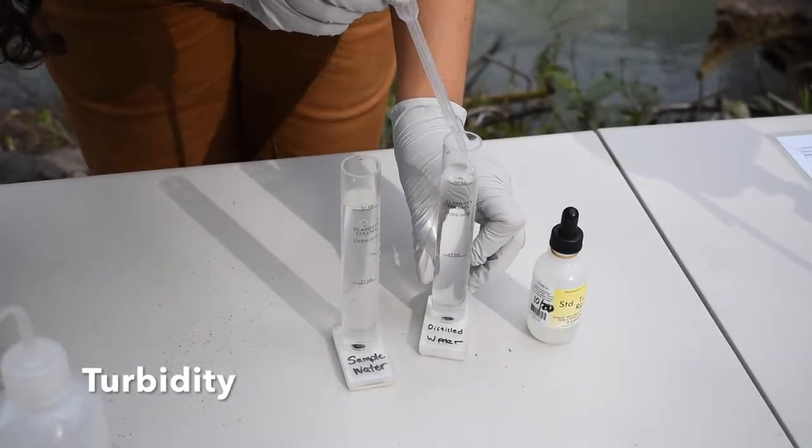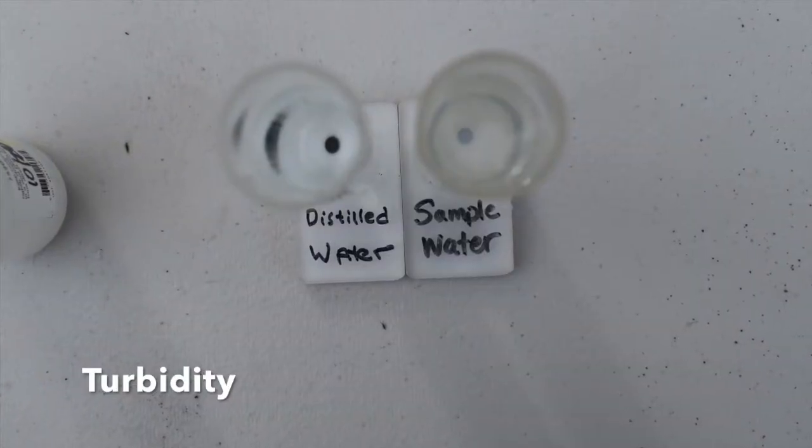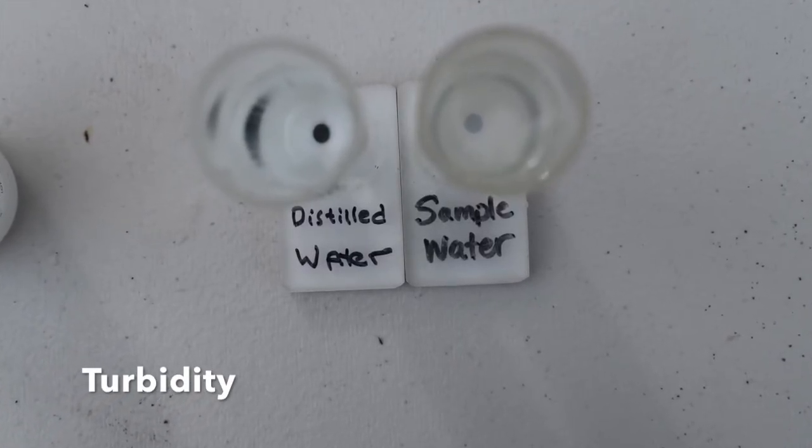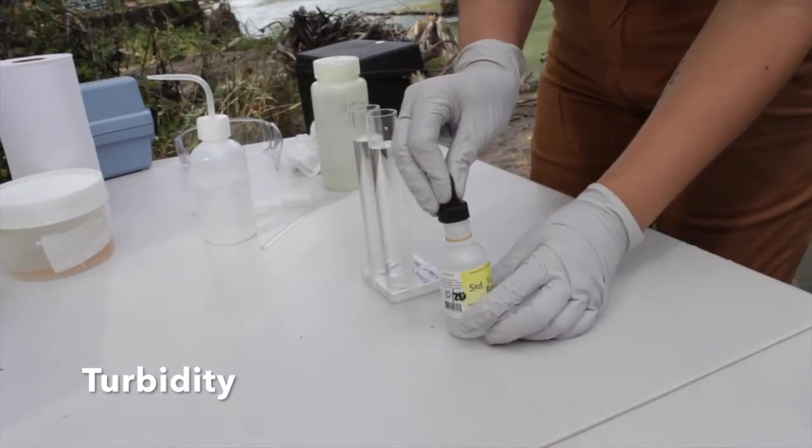When looking down the tubes vertically, we can clearly see the dot at the bottom of the tube better in the distilled water than in the sample water.